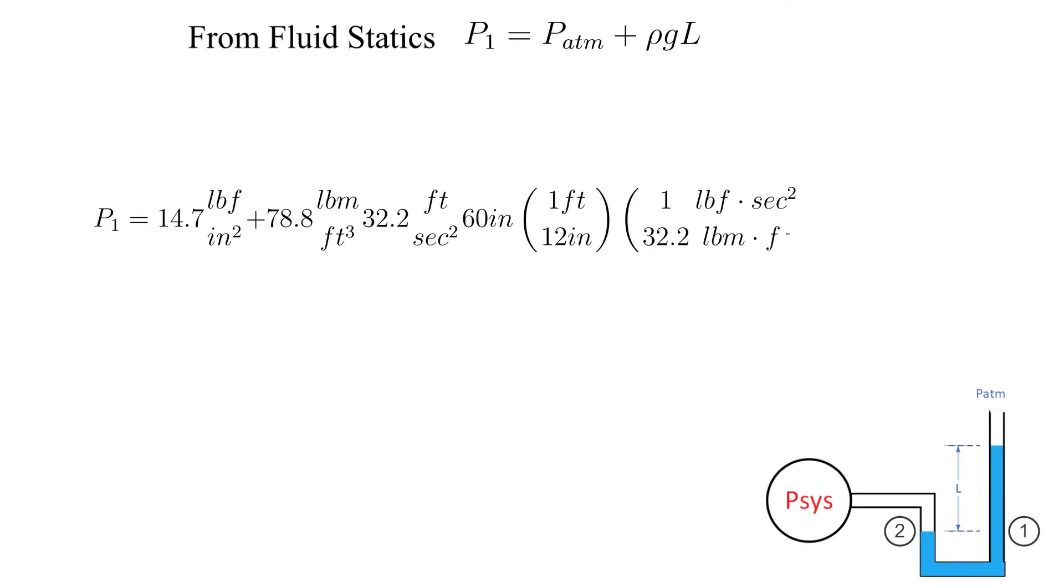We are almost ready to solve for the system pressure. From fluid statics, P1 is equal to P atmosphere plus rho GL. The solution is shown here, with the major parameters identified. We also use conversion factors, including the gravitational constant G sub C.